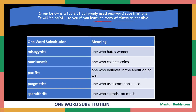The table shows on the left hand side the words and on the right hand side their meanings. The first word is 'misogynist' — misogynist refers to a person who hates women. Then we have 'numismatic' — numismatist means the study of coins, so numismatic refers to somebody who collects coins. Then we have 'pacificist' — pacificist is a believer in the abolition of war, somebody who is not in favor of war.